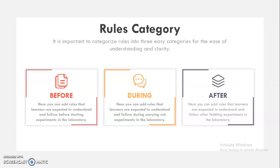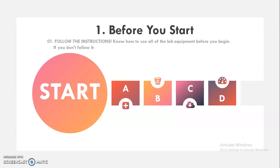This is how you can easily organize your lab rules into three manageable chunks or categories for the ease of understanding as well as clarity for your students. Now let's see them one by one. First, the B4 category. The first rule: follow instructions. You can add a little bit of description here — know how to use all the lab equipment before you begin.